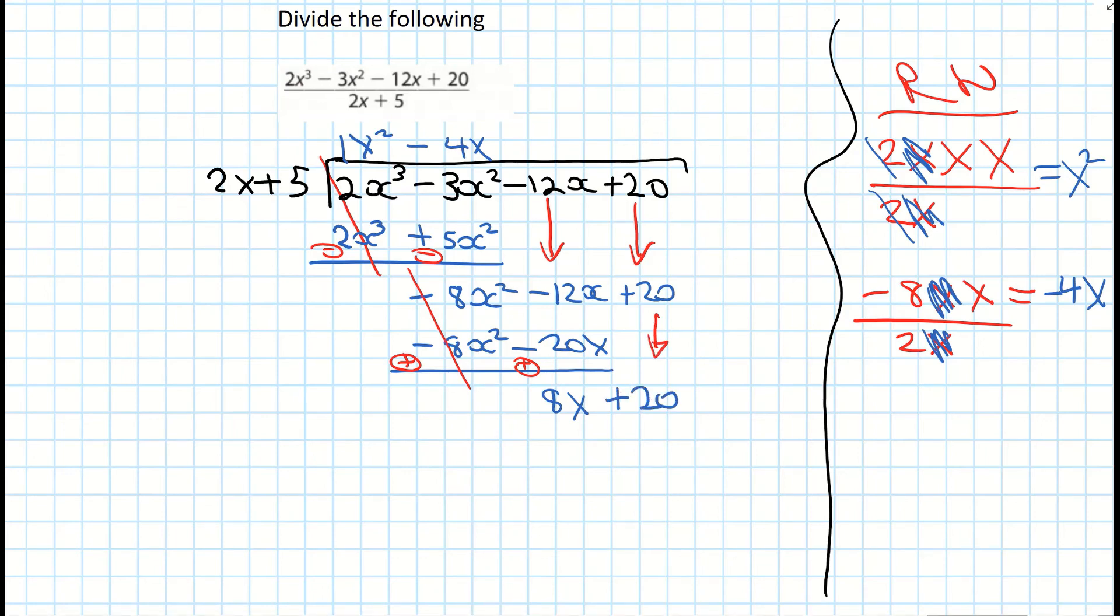And we still haven't got our remainder 0 so we have to go again. Now I'm dividing the 2x into the 8x. And again come over to your rough work. That's becoming 8x over 2x. And 2 into 8 becomes 4. And x divided into x becomes 1. So they'll cancel. So that's leaving us with a positive 4.